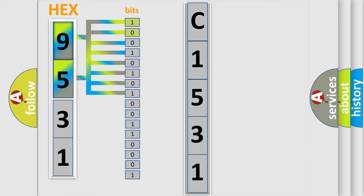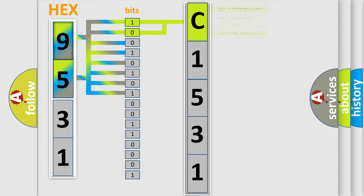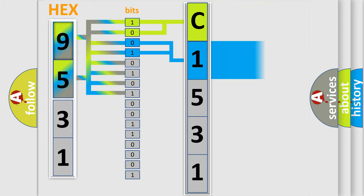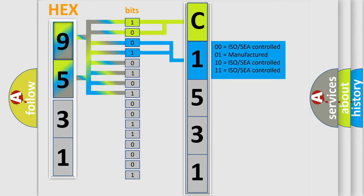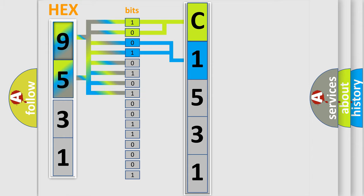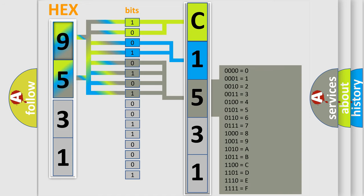The bit has two logical states: zero (low level) and one (high level). By combining the first two bits, the basic character of the error code is expressed. The next two bits determine the second character. The last bit styles of the first byte define the third character of the code.